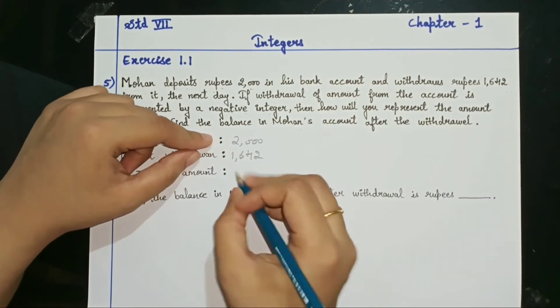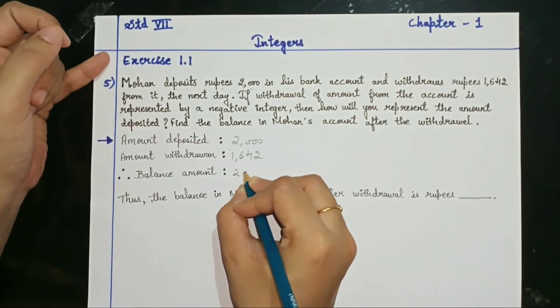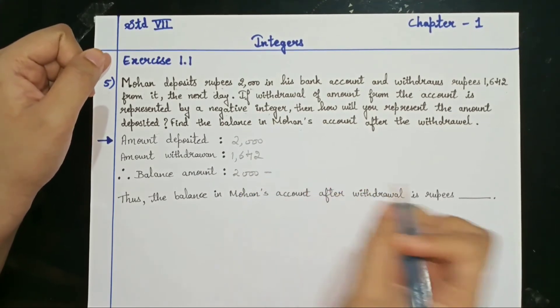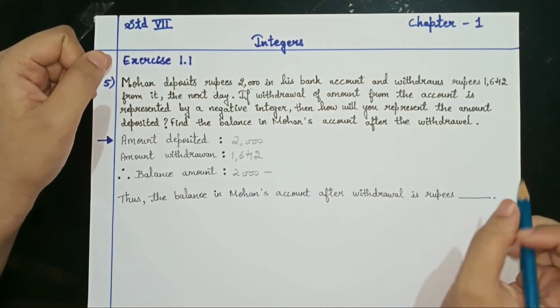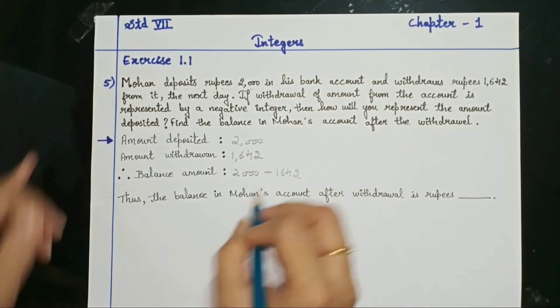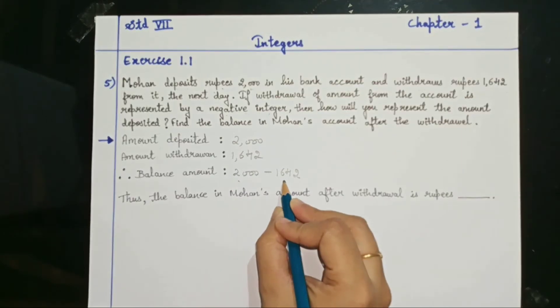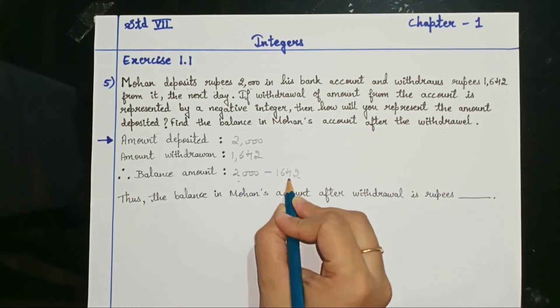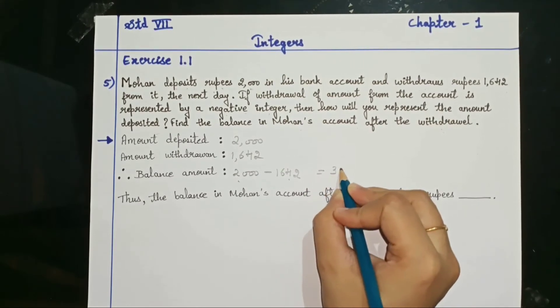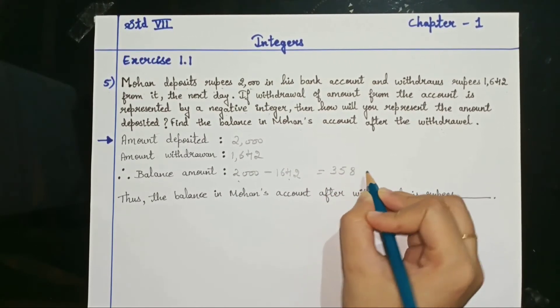So your amount was 2000 and then you have to do subtraction, why? Because he is doing withdrawal there. Subtraction 1642. So minus this, 2000 minus 1642, what will be the answer? It will be 358 rupees.